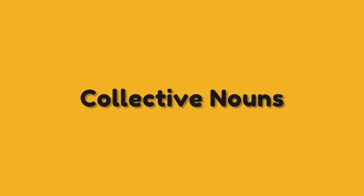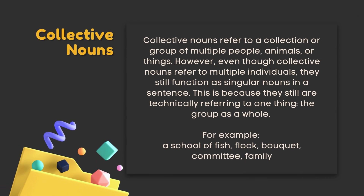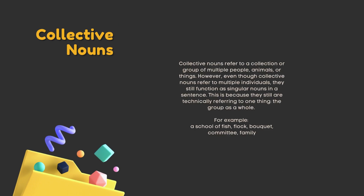Collective nouns refer to a collection or group of multiple people, animals, or things. However, even though collective nouns refer to multiple individuals, they still function as singular nouns in a sentence, because they are technically referring to one thing — the group as a whole. For example: a school of fish, flock, bouquet, committee, family.